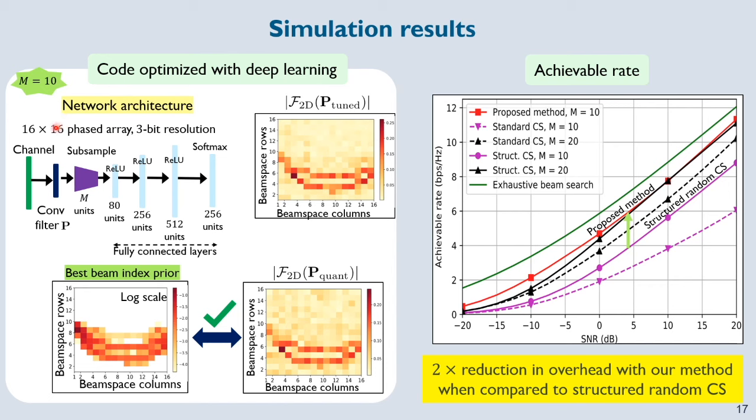For simulations, we consider a 16 x 16 phased array with 3-bit phase shifters at the transmitter. Because it's a 16 x 16 array, the 2D DFT codebook for this system has 256 elements. The neural network was optimized using a large vehicular channel dataset which had both line of sight and non-line of sight channels.